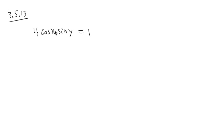I can look at this equation as a product of two functions, 4 cosine x, and then multiply by sine y is equal to 1. Well, the y is not isolated, I'm going to implicit differentiate it.